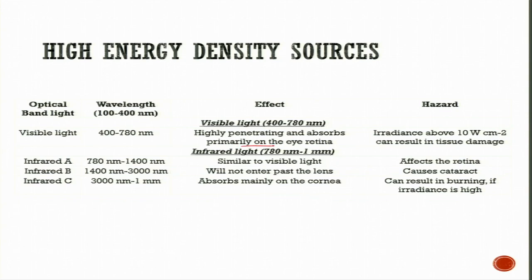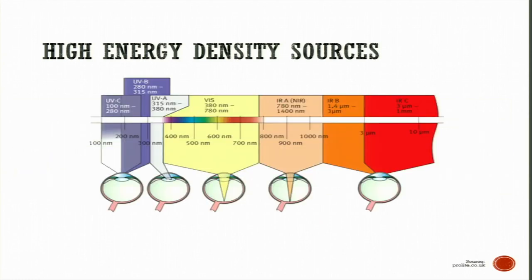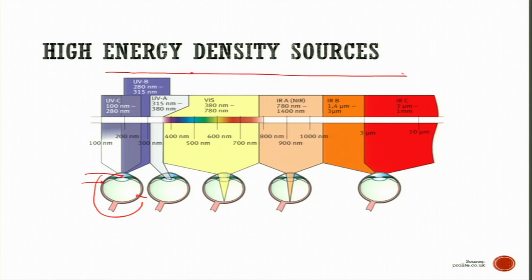Visible light is highly penetrating and absorbs primarily on the retina; irradiance above 10 watts per centimeter squared can result in tissue damage. Infrared A, B, C — wavelengths from 780 nanometers to 1 millimeter — will not pass the lens but absorbs mainly on the cornea, and the effect on the retina causes cataract and can result in burning. Ultraviolet C light is also used for sanitization of equipment. As wavelength increases from UV C through UV B, UV A, visible, and infrared, the depth of penetration into the eye increases progressively.